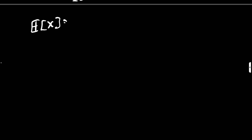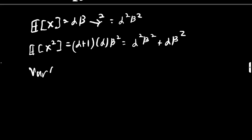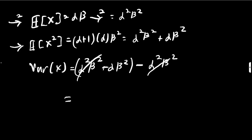So here's what we've found: E[x] equals alpha beta, and E[x²] equals alpha plus 1 times alpha times beta squared, which expands to alpha squared beta squared plus alpha beta squared. Squaring E[x] gives alpha squared beta squared. The variance — E[x²] minus E[x] squared — is alpha squared beta squared plus alpha beta squared minus alpha squared beta squared. Those terms cancel, leaving the variance equal to alpha beta squared.